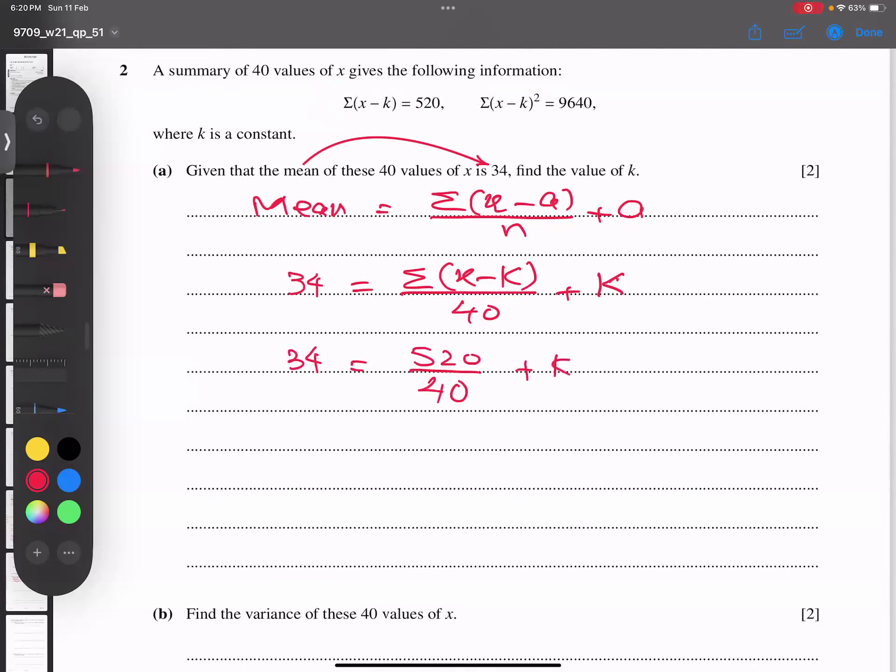The zeros cancel out and I get 34 equals 13 plus k. Subtract 13 from both sides. Alhamdulillah, k equals 21 is my answer. Nothing hard, only basic algebra.